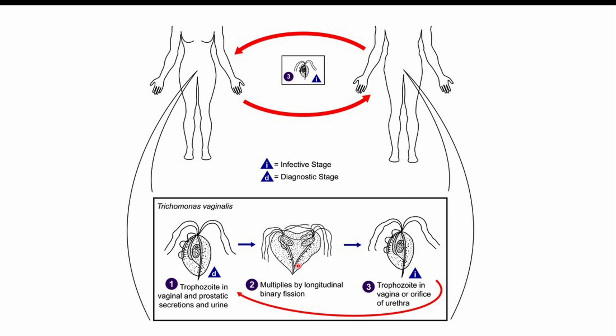Trichomonas vaginalis infects individuals through sexual contact. If an individual is infected, they will have these Trichomonas vaginalis organisms, which are motile — they can move around on their own. They reside in vaginal secretions, urethral secretions, and prostatic secretions, so they can reside in the prostate as well.